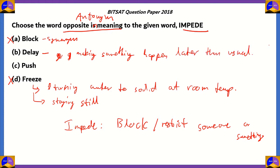For example, you usually reach the office at 8 but today you reach at 8:30 — you would say you got delayed by half an hour. The word 'delay' refers to lateness that a person experiences because of unforeseen circumstances. Therefore, option B is also incorrect.